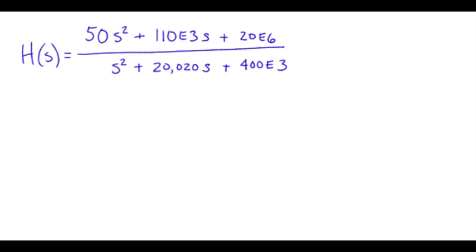So when you're confronted with H of S, especially in this form, what you need to do is factor that so you can identify the individual zeros and poles and any possible constant offset there might be. That is a constant gain factor.